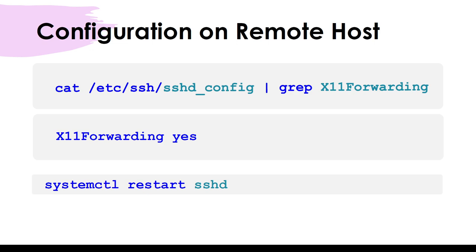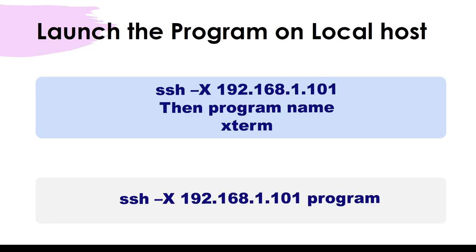Once you change the X11Forwarding parameter to 'yes', restart the sshd service using the command 'systemctl restart sshd'. Then on the local host, your base machine, launch the Linux terminal and type 'ssh -X' followed by the IP address of the remote host. There is another way: you can specify the program name directly at the end of the 'ssh -X' command.